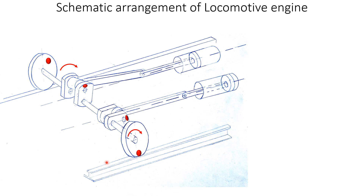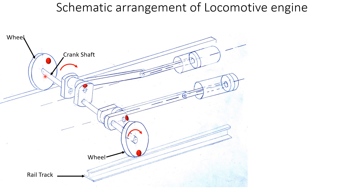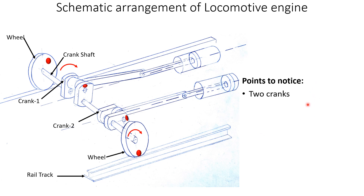Let's understand the schematic arrangement of a locomotive engine. Locomotive engines rest on a number of wheels mounted on rail tracks. The crankshaft runs between the two wheels, and on this crankshaft we have two cranks — crank 1 and crank 2. The two cranks are at 90 degrees to one another.